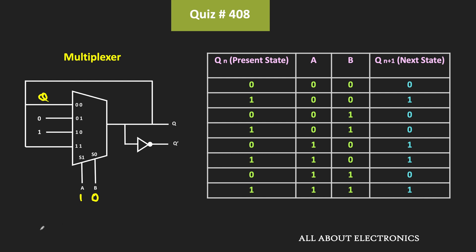Let us see the last case. Whenever A and B both are 1, the last input line will get connected to the output. Once again, there is a feedback from the output to the input side, meaning the input to this fourth input line is equal to Q, and therefore the output will be the same as the current state. So presently, if qn is 0, then in the next state it will remain 0, and if qn is 1, then in the next state it will remain the same. So whenever A and B are both 0 or both 1, this circuit will maintain its current state. Whenever A is 0 and B is 1, the circuit will get reset, and for A equal to 1 and B equal to 0, the circuit will get set to 1.